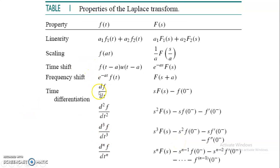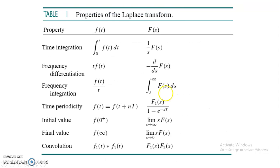Mainly, we are using the property that the derivative of f of t equals f of s into s minus f of 0 minus. Here, f of 0 is the value of the function at t equals 0 minus — before switching. This property is applicable to inductance. Similarly, the integration property is applied to the capacitor, which equals 1 over s times f of s.